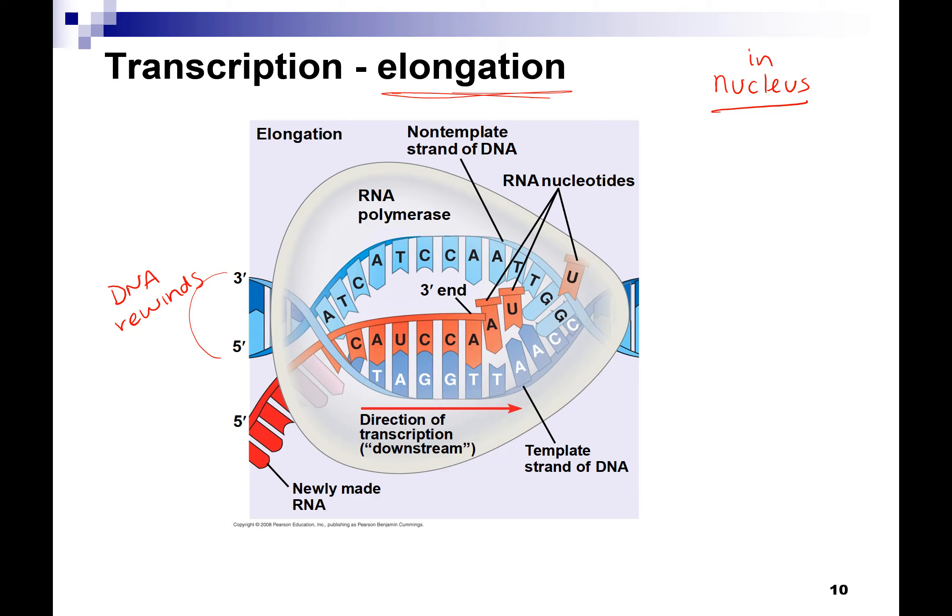The cells make an RNA copy of a gene so it can go and be translated into a protein, but we don't want to mess with the DNA. If we make a mistake in the RNA or if it gets chewed up in the cytoplasm, that's okay because we have that original information stored in the nucleus in our DNA.